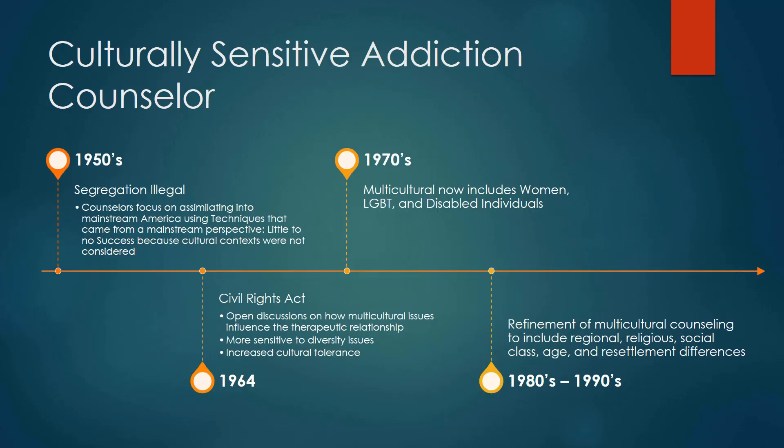In the 1950s, segregation became illegal, so counselors began focusing on assimilating into mainstream America using techniques from a mainstream perspective — with little to no success because cultural contexts were not considered. Then in 1964, the Civil Rights Act happened, opening discussion on how multicultural issues influence the therapeutic relationship, with more sensitivity to diversity issues and increased cultural tolerance. As we moved into the 1970s, multicultural views expanded to include women, the LGBT community, and disabled individuals. In the 1980s and 90s, multicultural counseling was refined to include regional, religious, social class, age, and resettlement differences.